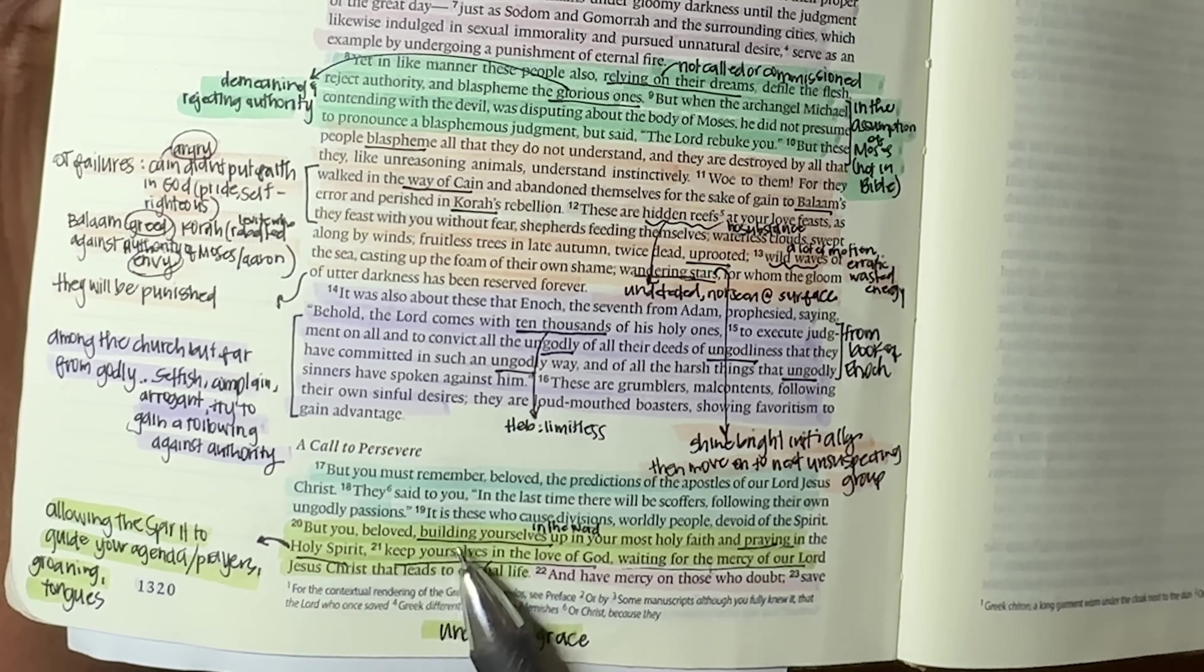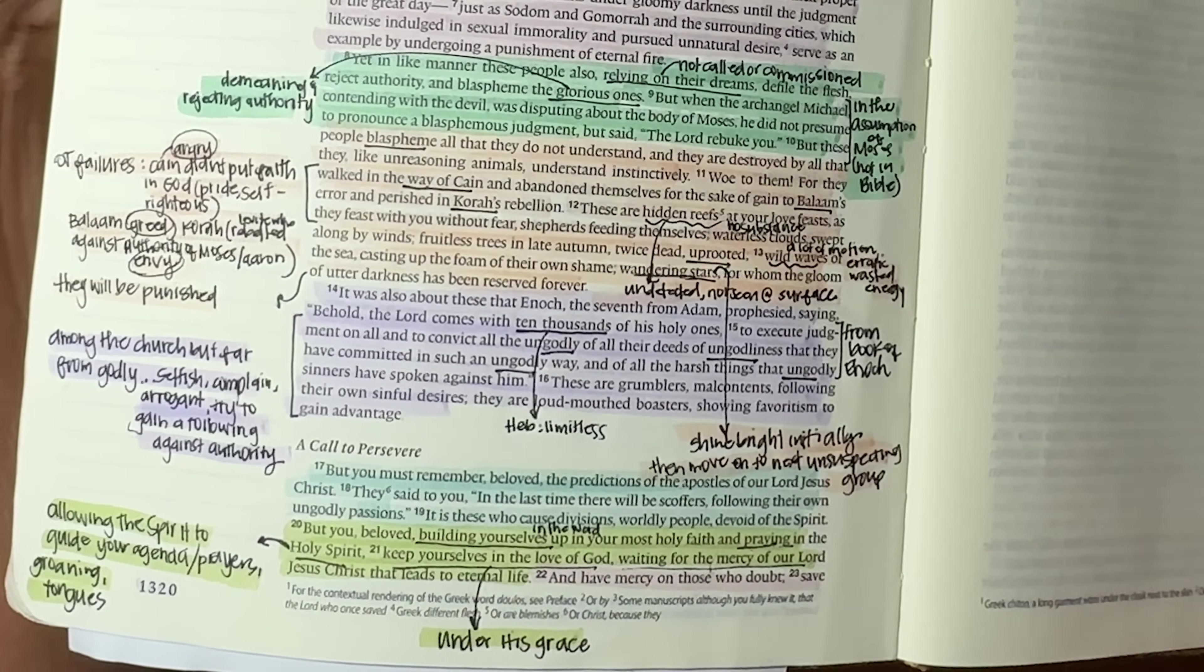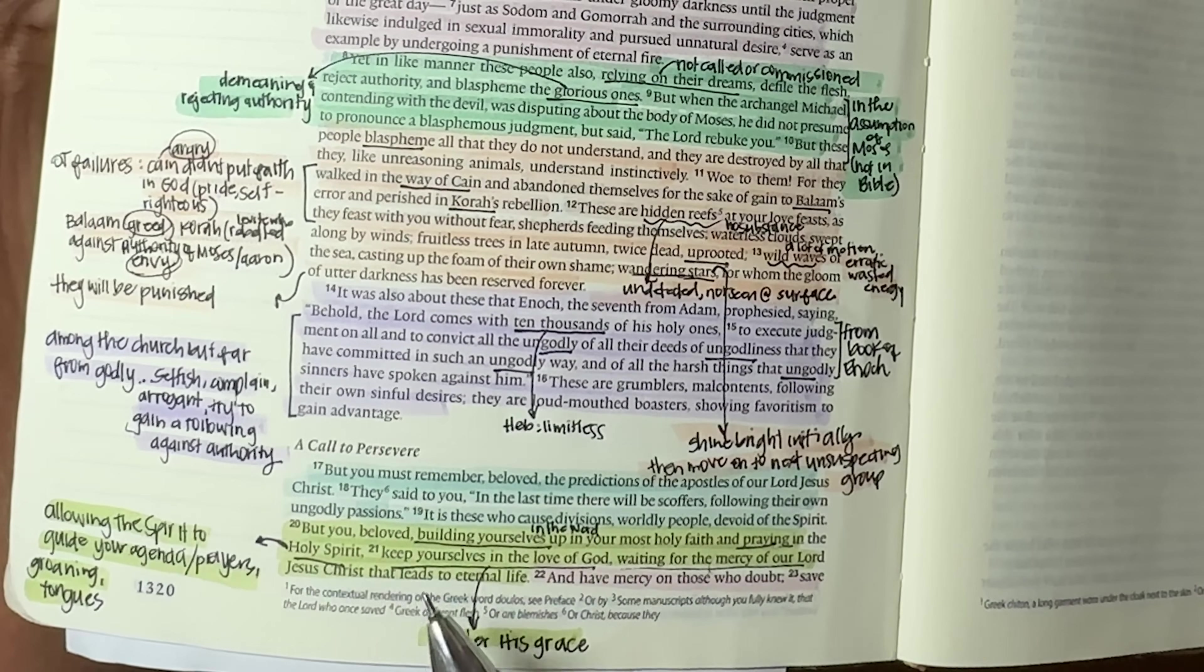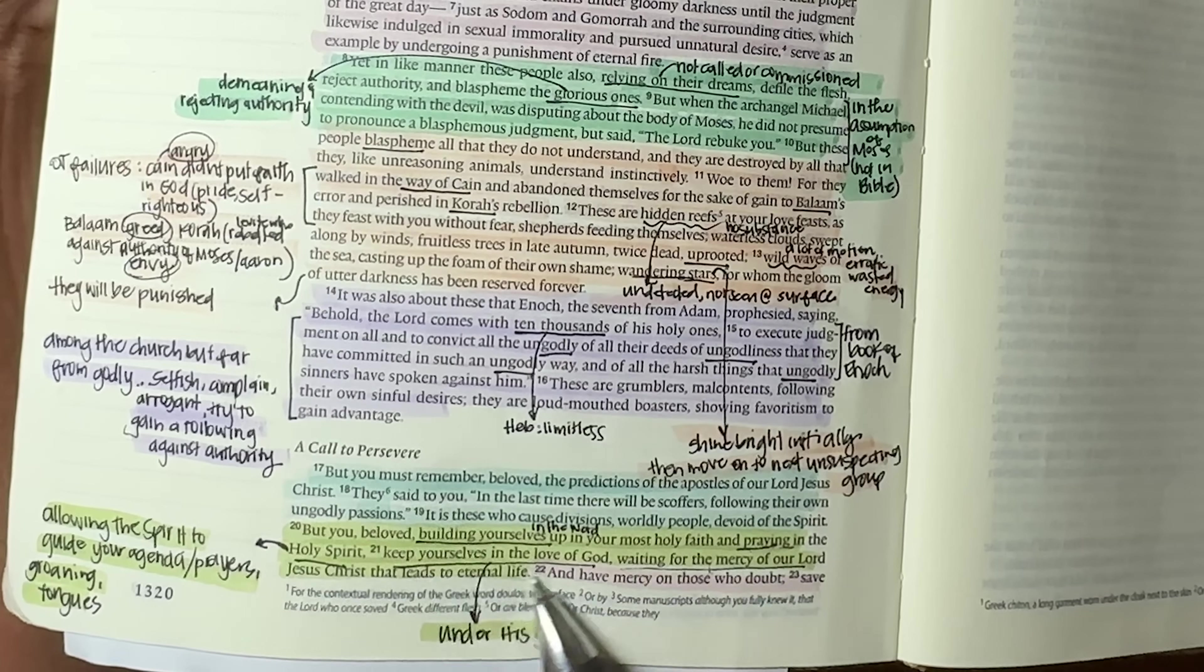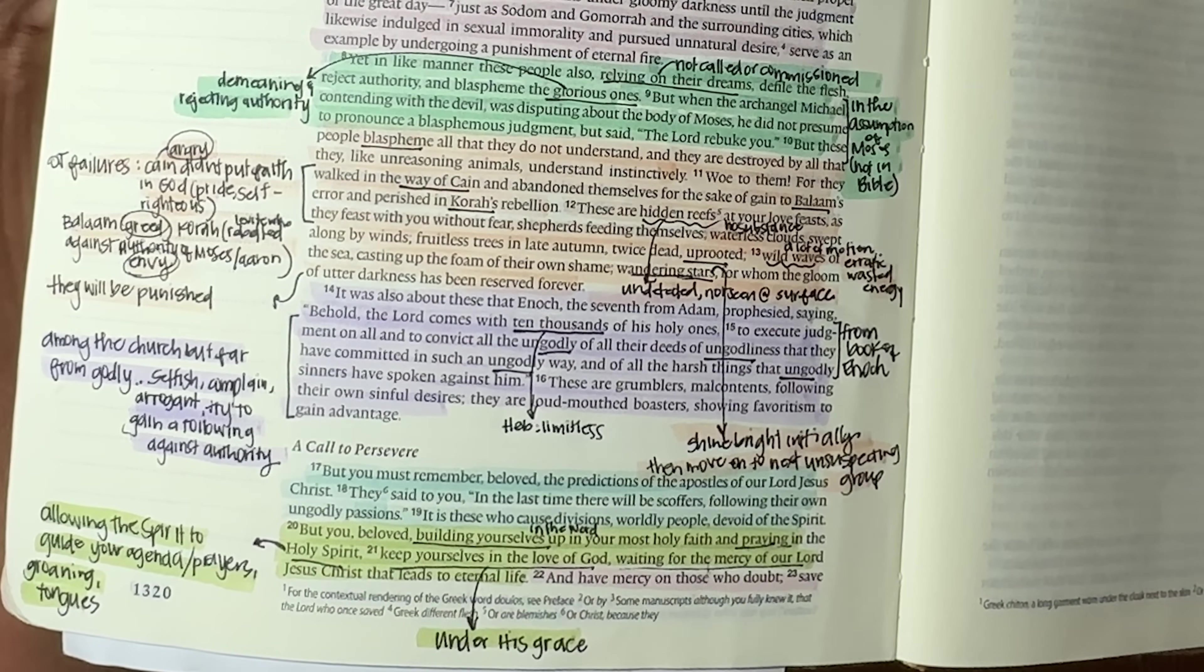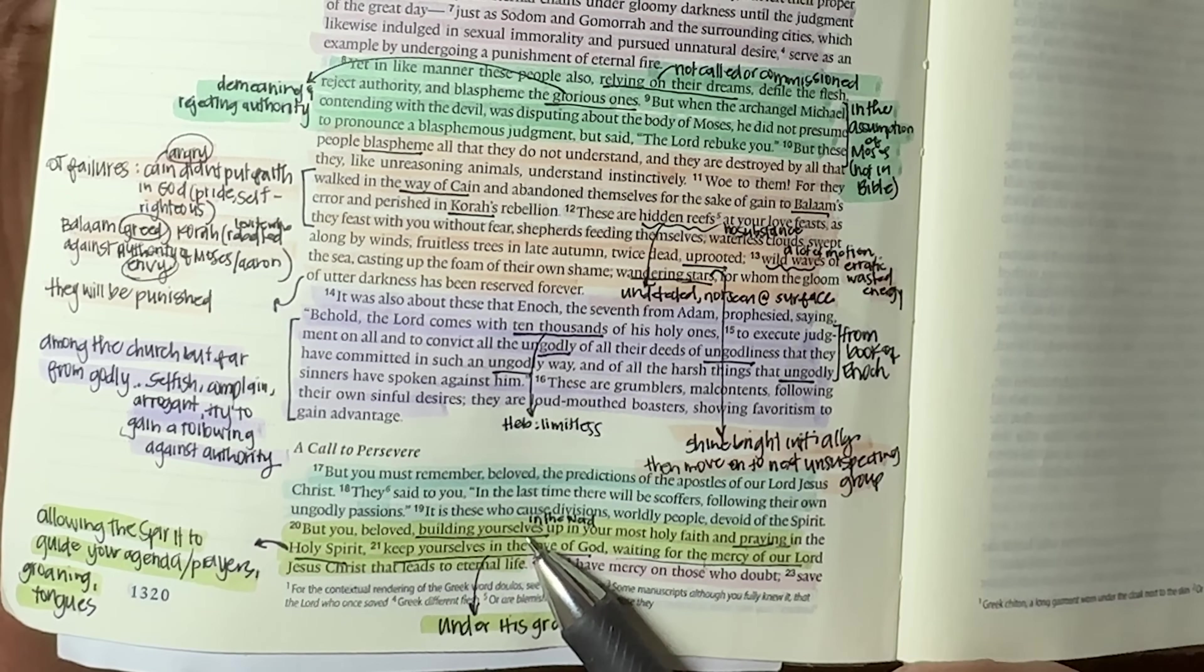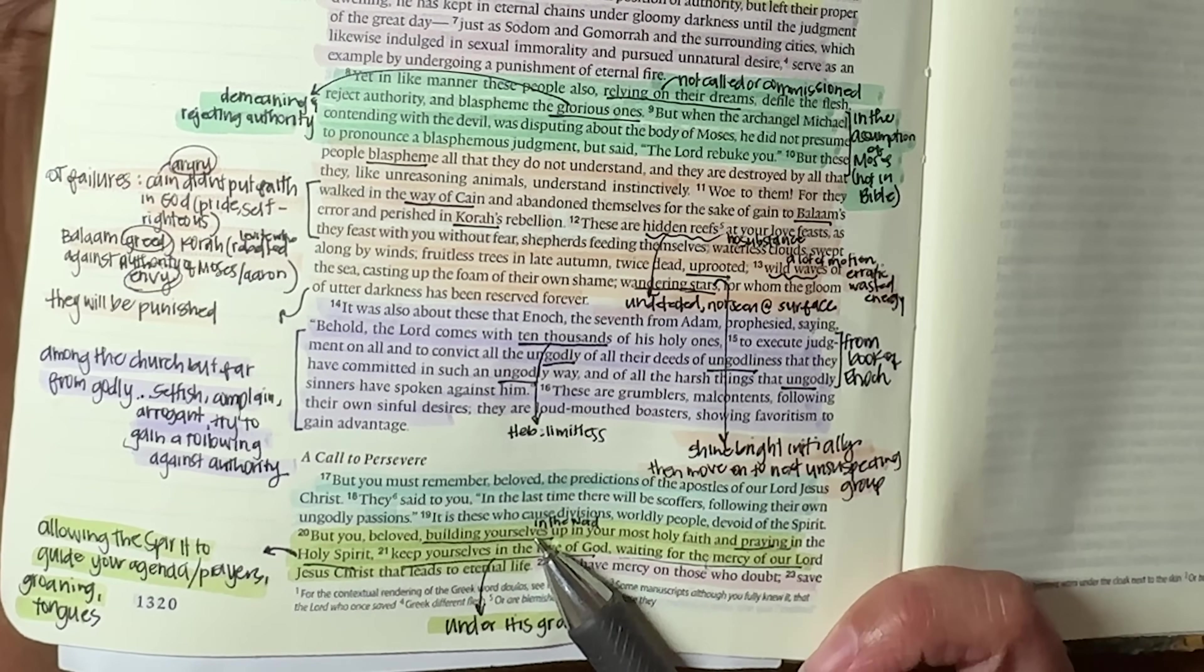But you, beloved, building yourselves up in your most holy faith. So he's basically saying, here's how you are able to resist them. Praying in the Holy Spirit, keep yourselves in the love of God. This is what it all hinges upon right here. Keep yourselves in the love of God, waiting for the mercy of our Lord Jesus Christ that leads to eternal life. So how do we build ourselves up in the faith? Well, of course, that's going to be in the word. That's how we build our faith, right? Faith comes by hearing, hearing by the word of God.